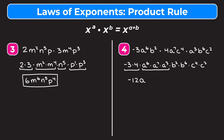For b squared times b to the sixth, we add the exponents: 2 plus 6 is 8, so we get b to the eighth. And for c to the fourth times c squared, we add 4 and 2 to get c to the sixth. So our final answer is negative 12 times a to the sixteenth times b to the eighth times c to the sixth.